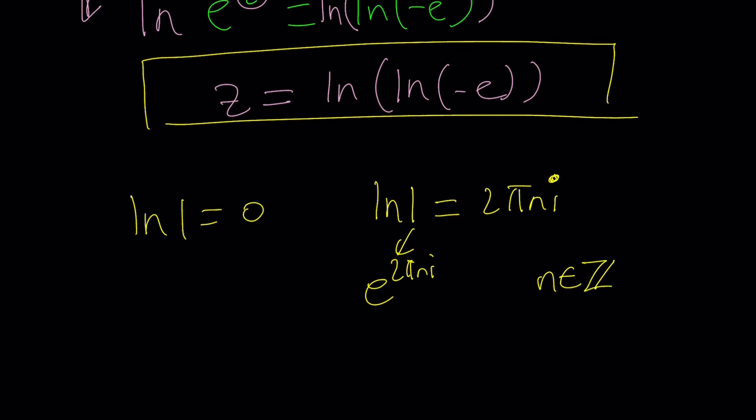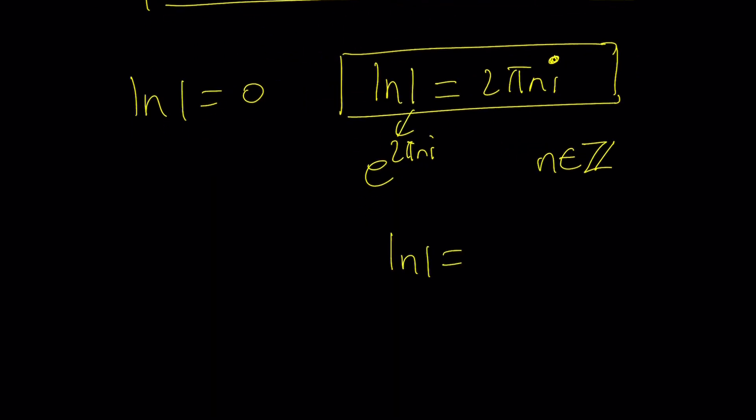So in other words ln one in the complex world has infinitely many values which are called the branches. So this is complex logarithm and there's a way to do it properly but in this format I think it's good enough. So basically if n is zero this is zero, but if n is not zero then ln one can be anything else like ln one could be 2πi which is not zero obviously.